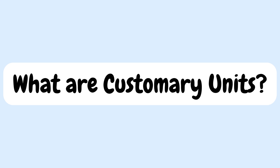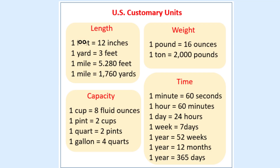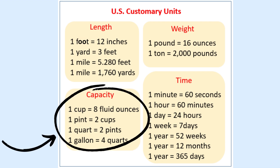Today I'm going to review customary units, how to convert units of capacity, and then we're going to create a game to help us memorize the equivalencies. Customary units are what the United States uses to measure time, weight, length, and capacity. Right now on screen you're seeing a reference sheet for the customary units that you may see in your textbooks and on standardized tests. In this video, we're going to be focusing on converting the customary units of capacity.